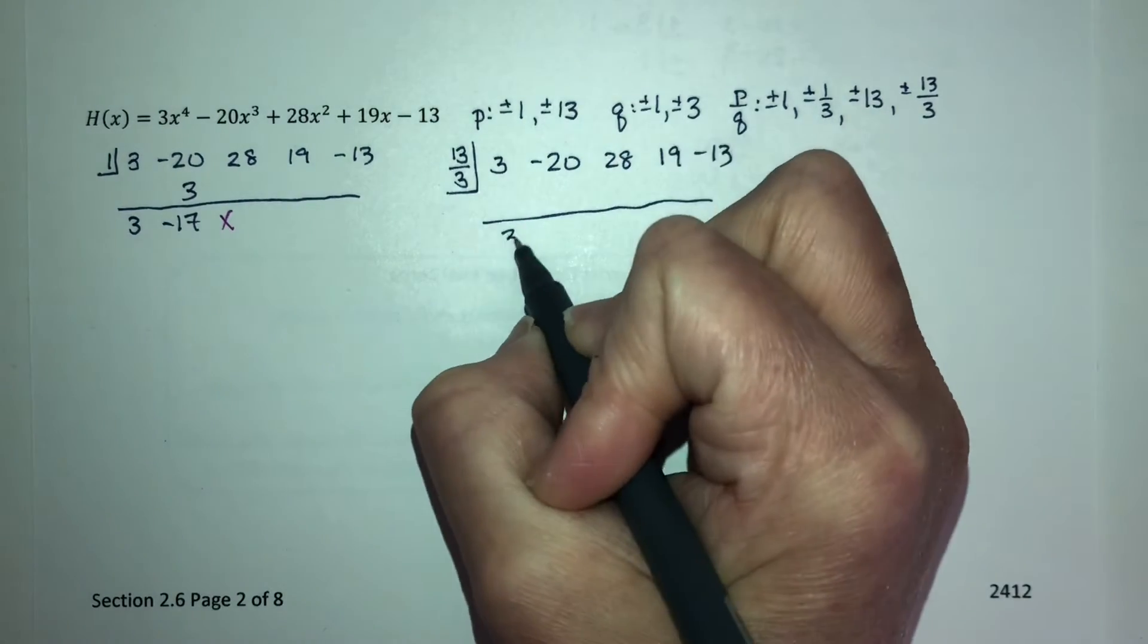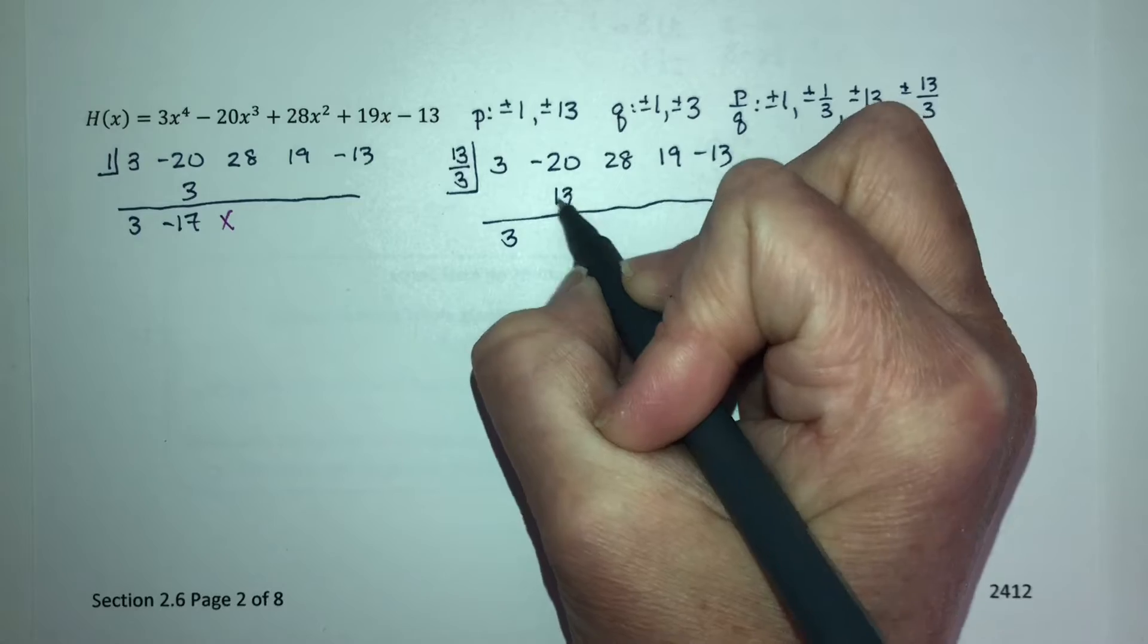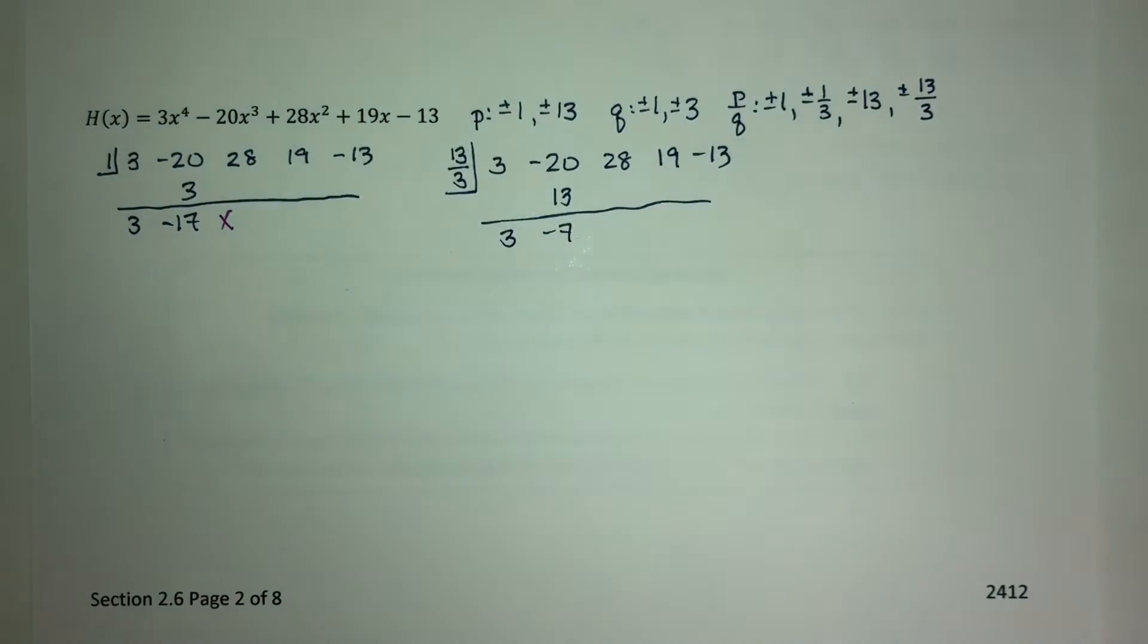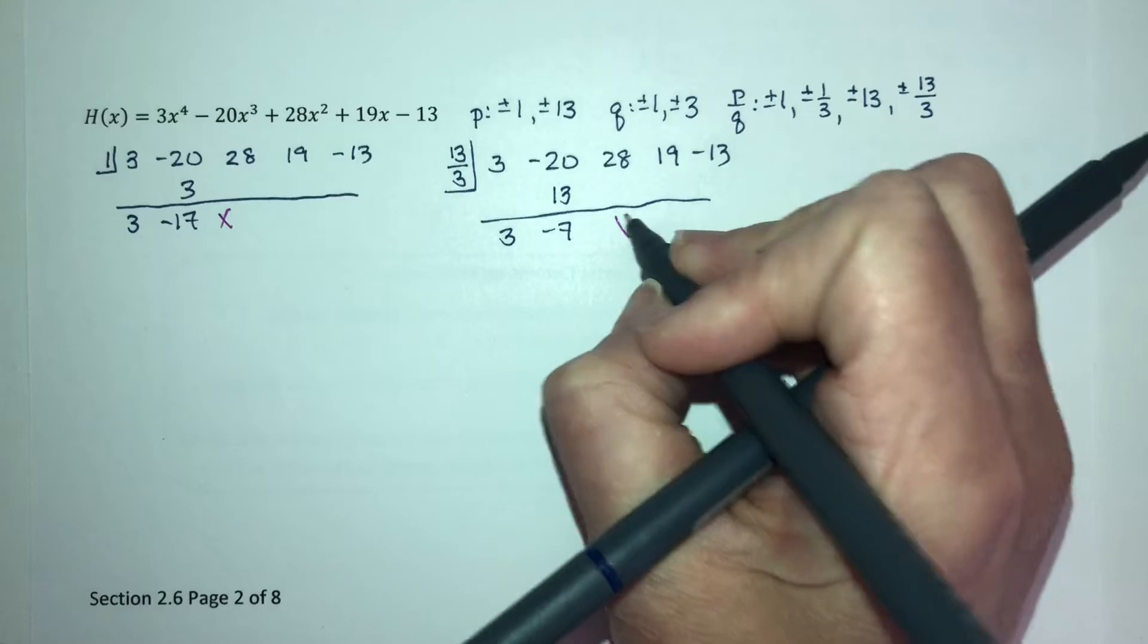Bring down the 3, you get a 13, and you get a negative 7, and we got a negative, so not an upper bound.